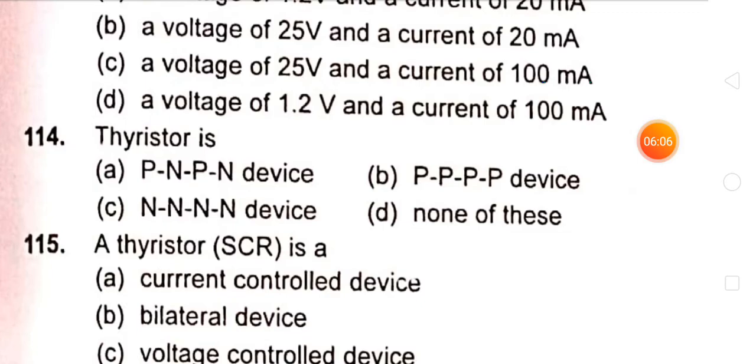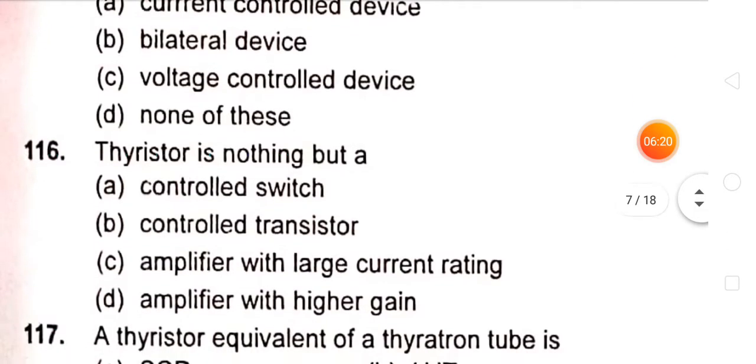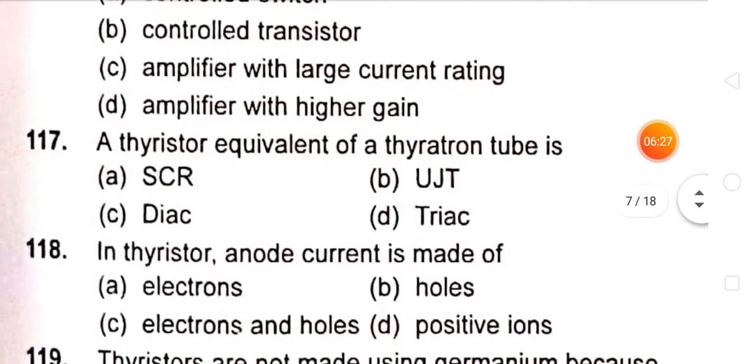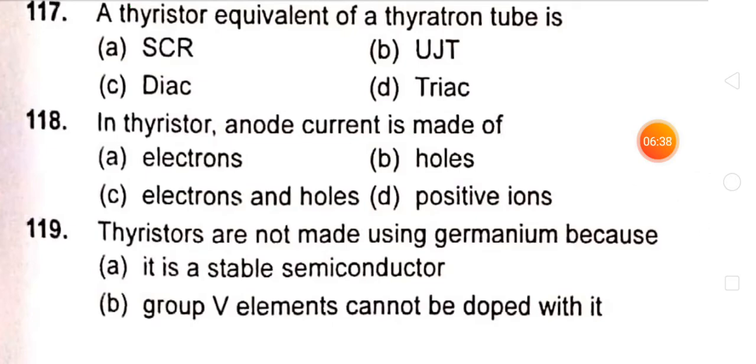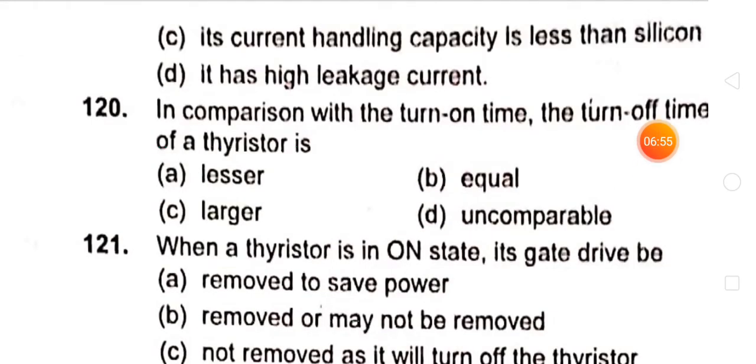TRIAC is a PNPN device. A thyristor is a current control device. Thyristor is nothing but a controlled switch. A thyristor is equivalent of a thyratron tube. In thyristor, anode current is made of electrons and holes. Thyristors are not made using germanium because it has high leakage current.